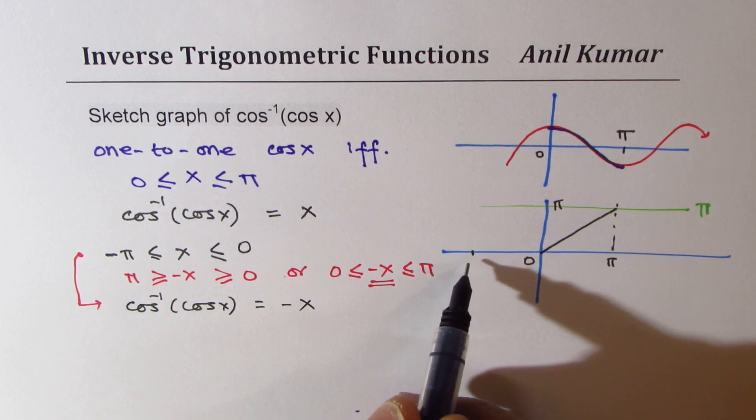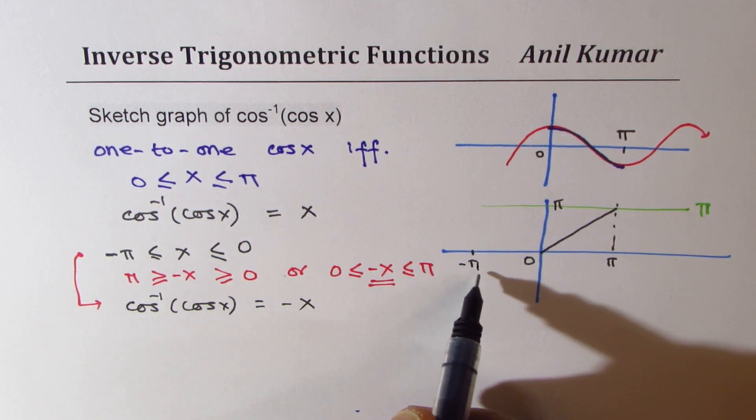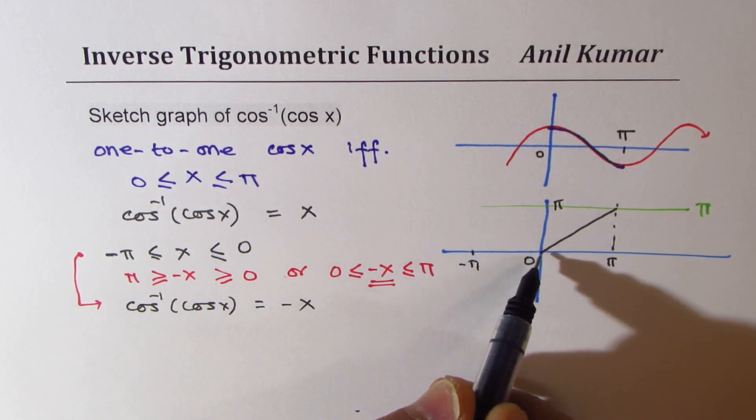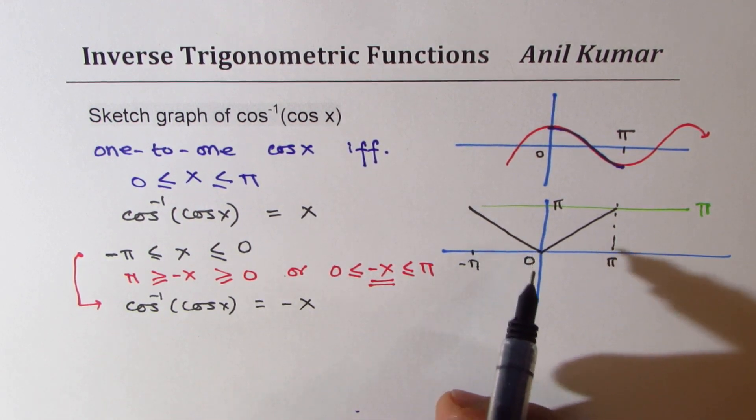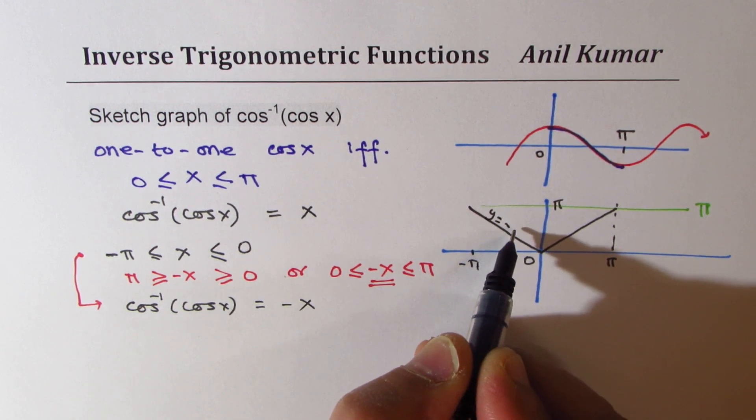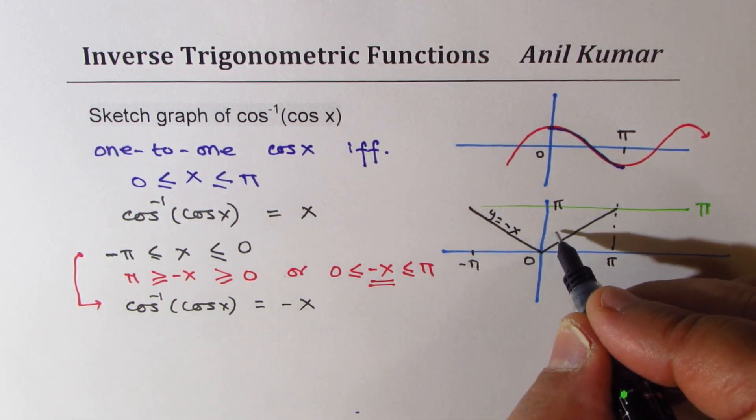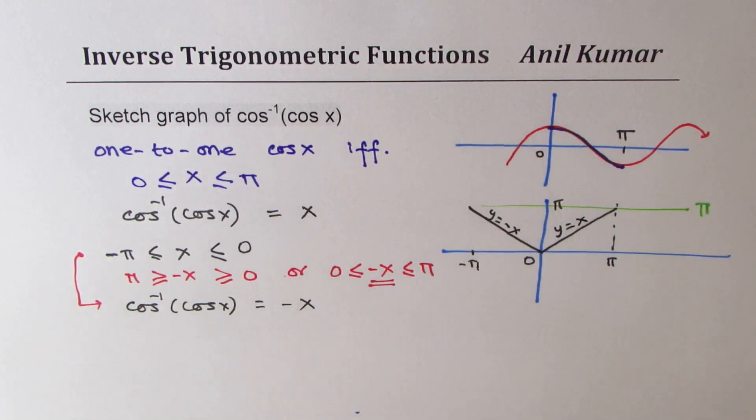It will be at minus pi. The value minus of minus pi will be positive. So, this graph will be kind of like this. Do you see that? I could write this as y equals to minus x here and y equals to x on the other side.